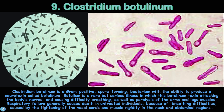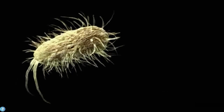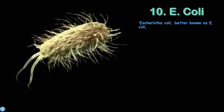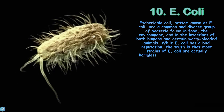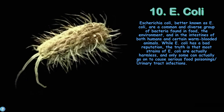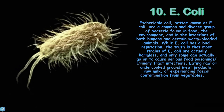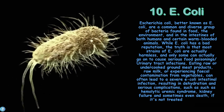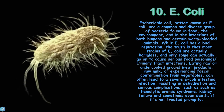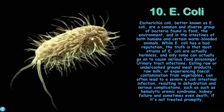And finally, number ten is E. coli. Escherichia coli, better known as E. coli, are a common diverse group of bacteria found in food, the environment, and in the intestines of humans and certain warm-blooded animals. While E. coli has a bad reputation, most strains are actually harmless, and only some can cause serious food poisoning or urinary tract infections. Eating raw or undercooked ground meat, raw milk, or experiencing fecal contamination from vegetables can lead to severe E. coli intestinal infection, resulting in dehydration and serious complications such as hemolytic uremic syndrome, kidney failure, and sometimes even death if not treated promptly.